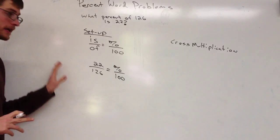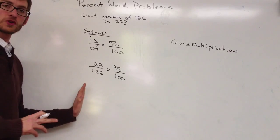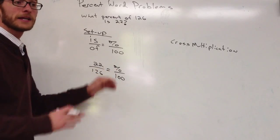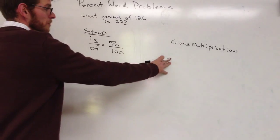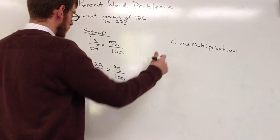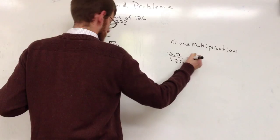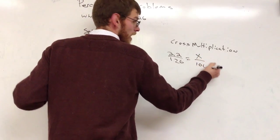Now, the way we can figure out when there's one fraction on one side and another fraction on the other, the way we can solve for the variable is by cross multiplication. So, if we come over here, still on screen now? Yeah. Okay, so cross multiplication here. We have 22 over 126 equals x over 100.